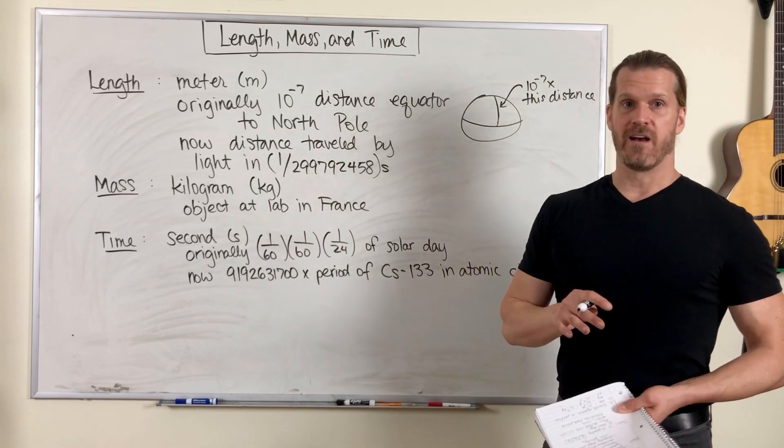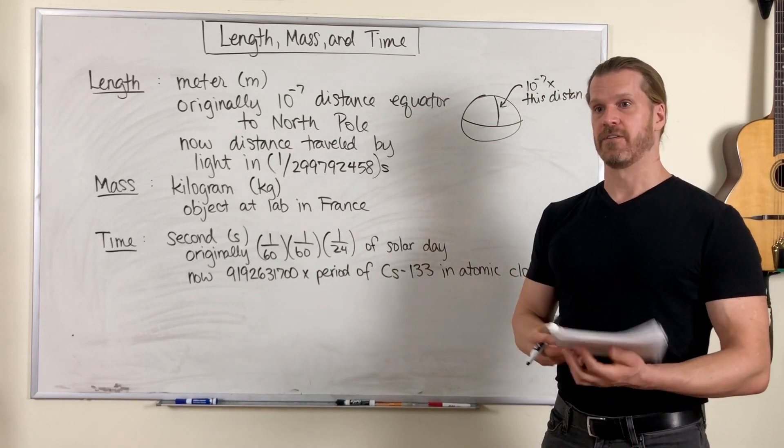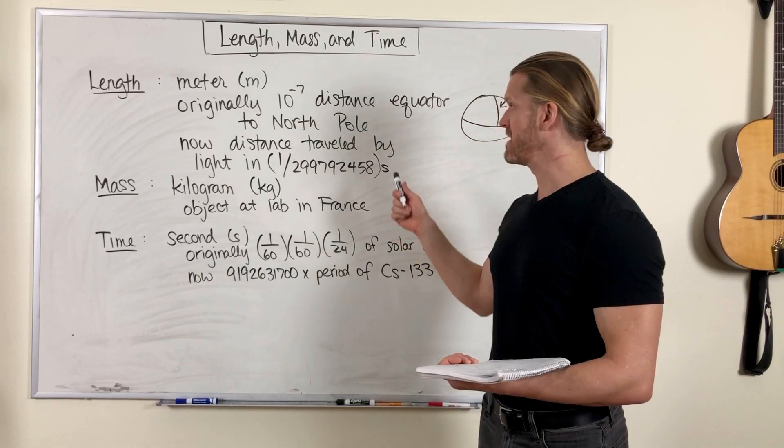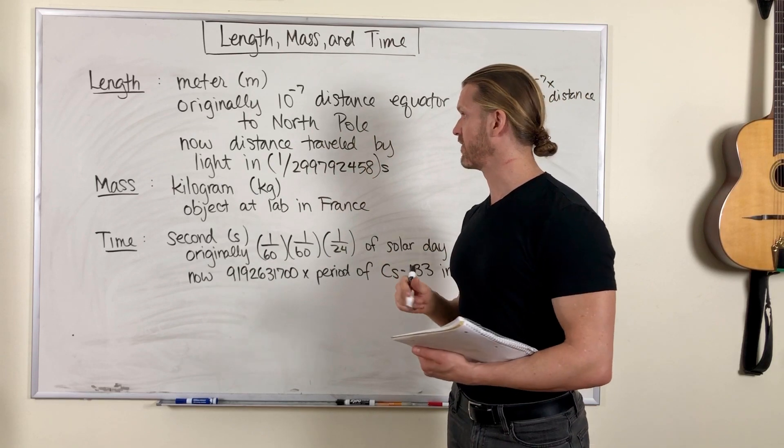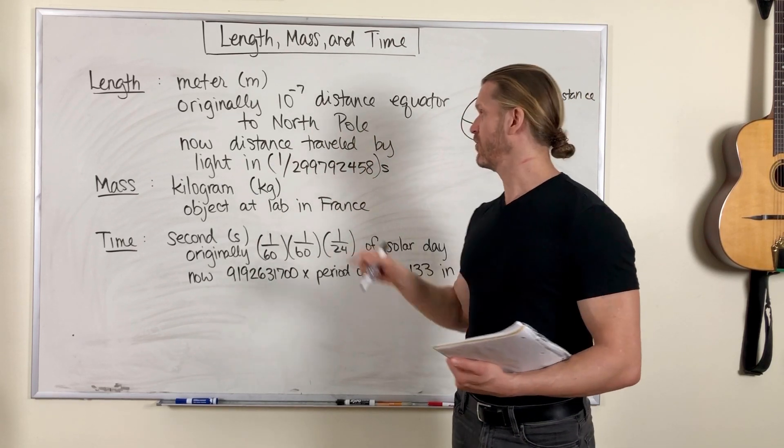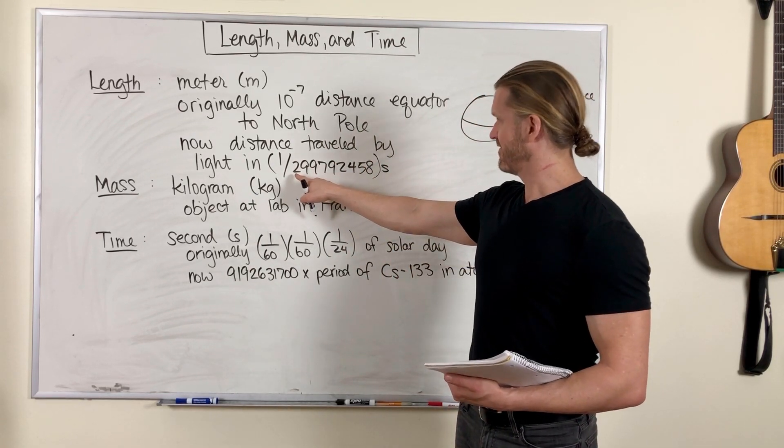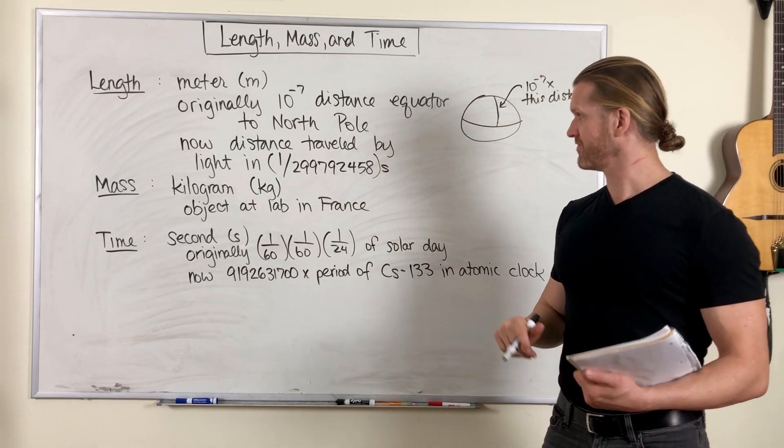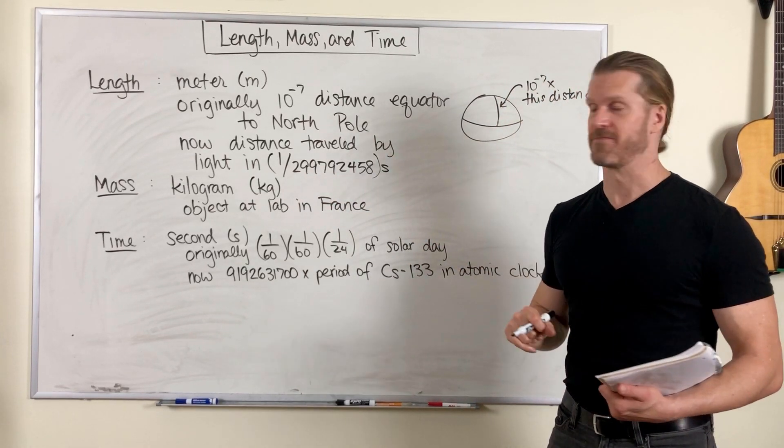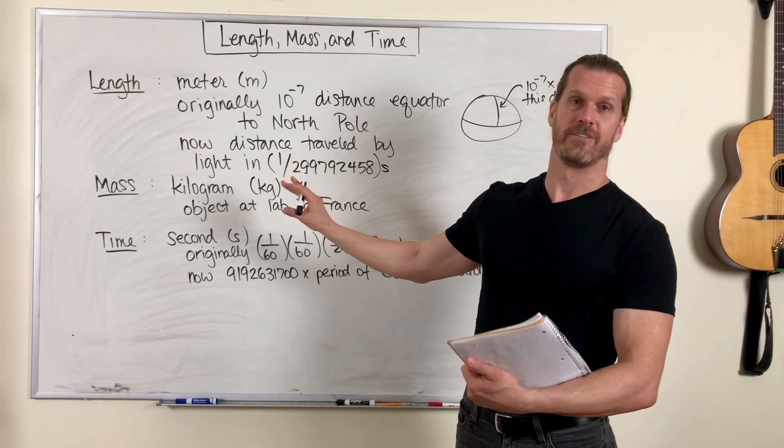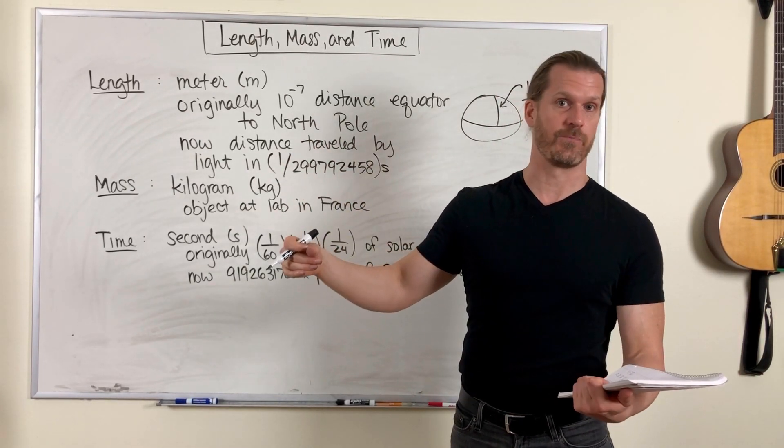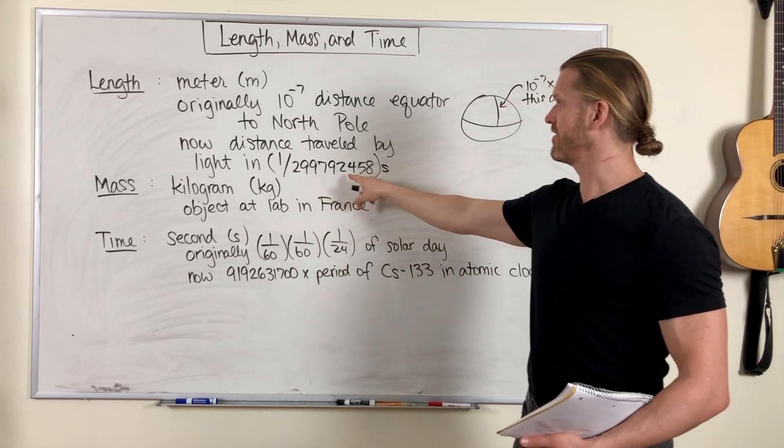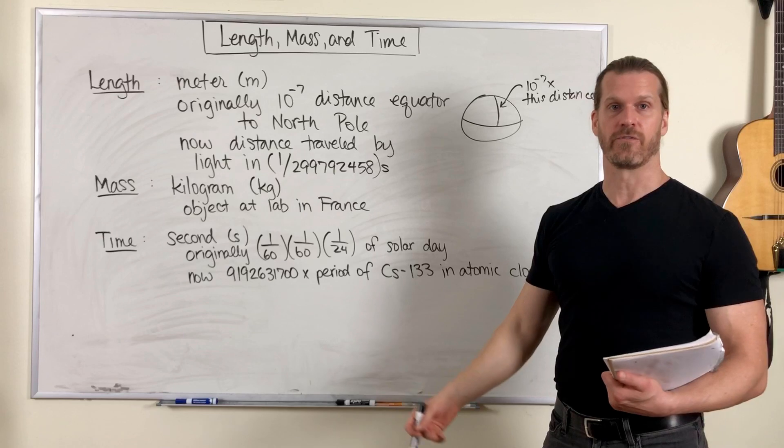So now we have a definition that is much more reliable. A meter is now defined as the distance traveled by light in one over 299,792,458 seconds. This also serves as a definition for the speed of light, by the way. The speed of light is 299,792,458 meters per second.